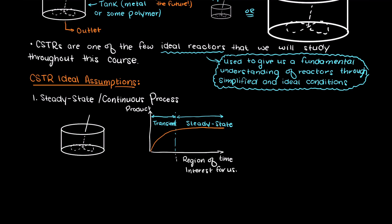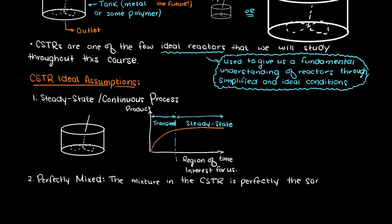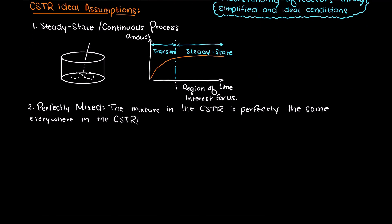A second assumption about CSTRs is that they are perfectly mixed. This means that the mixture within the CSTR is so well mixed that the composition, temperature, and other characteristics of the mass anywhere within this reactor will give us the same results.